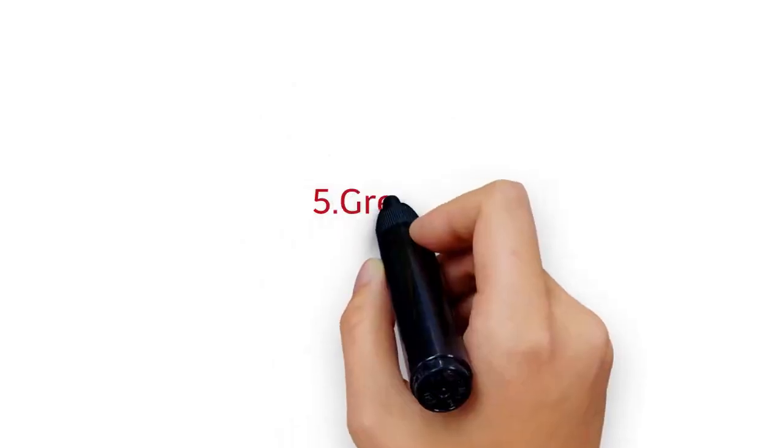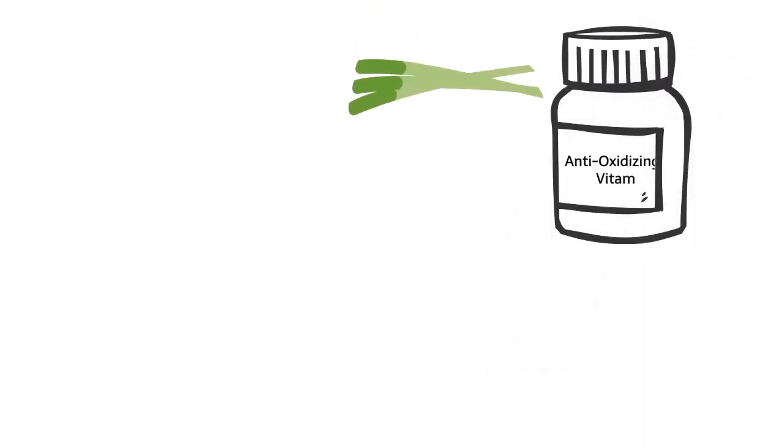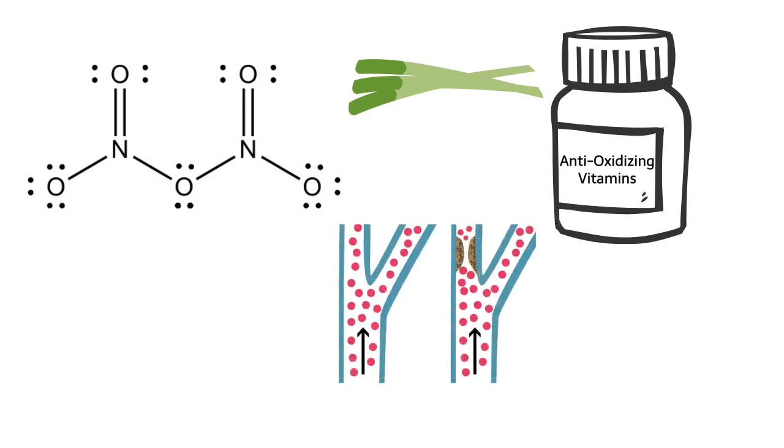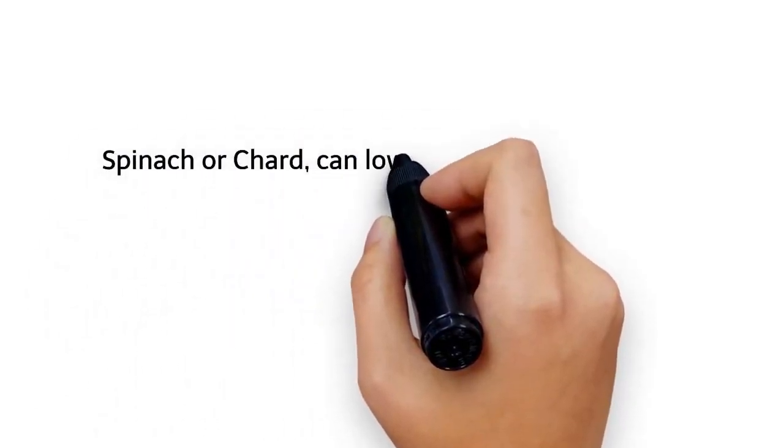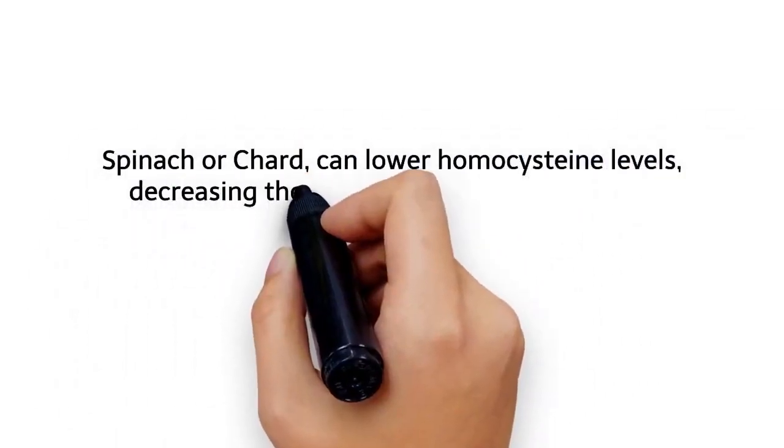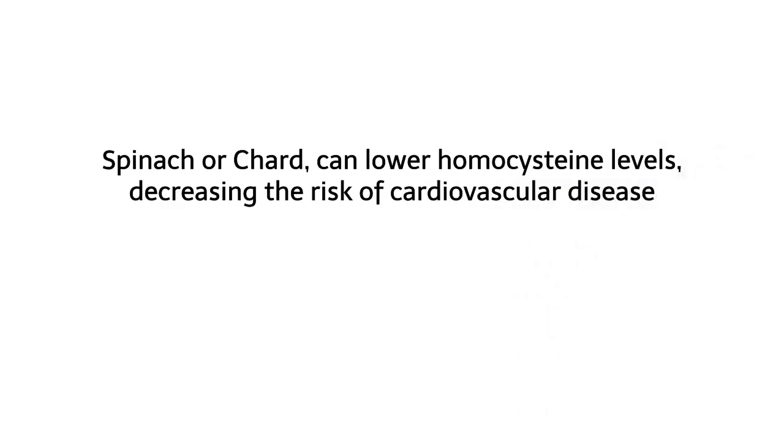Number five: Greens. Leafy greens are a rich source of antioxidizing vitamins which can prevent the oxidization of cholesterol, leading to plaque formation in the arteries. Just one serving a day of folate-rich leafy greens like spinach or chard can lower homocysteine levels, decreasing the risk of cardiovascular disease.